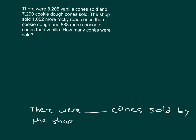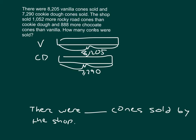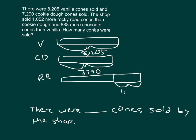The next problem asks how many total cones were sold by the shop across four flavors. We know vanilla (V) and cookie dough (CD), where cookie dough was 7,290. Using our next clue: the shop sold 1,052 more Rocky Road cones than cookie dough. So for Rocky Road, we start with the cookie dough amount and add 1,052 more, giving a combined bar length of 7,290 plus 1,052.